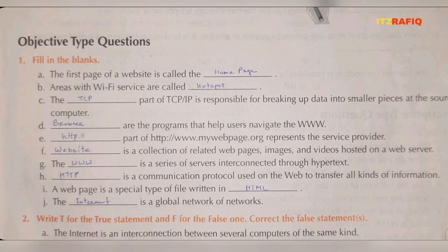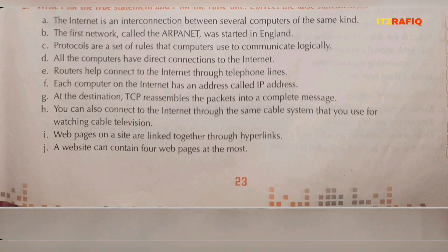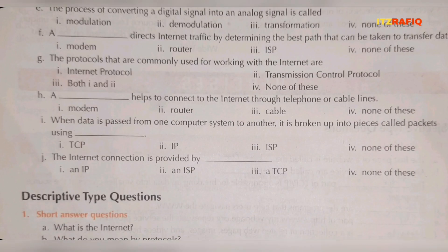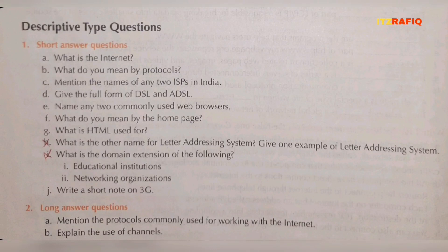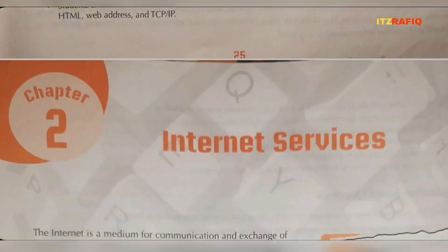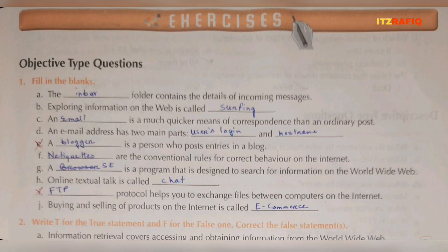For fill in the blanks, all are required. For true and false, I have not seen any omissions. For multiple choice, all are required. From descriptive questions, H and I are not required. From short answers and from long answers, only number J is not required. Now we'll move to Chapter 2: Internet Services.